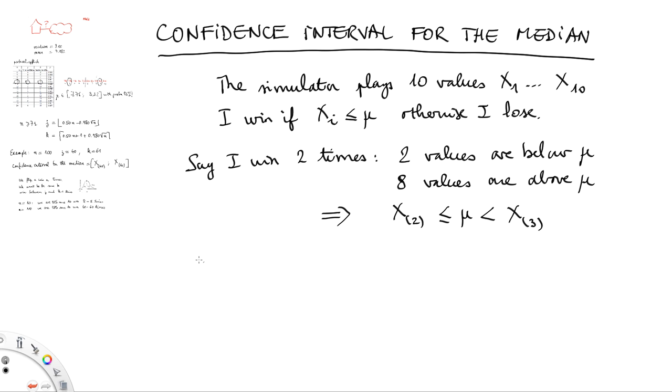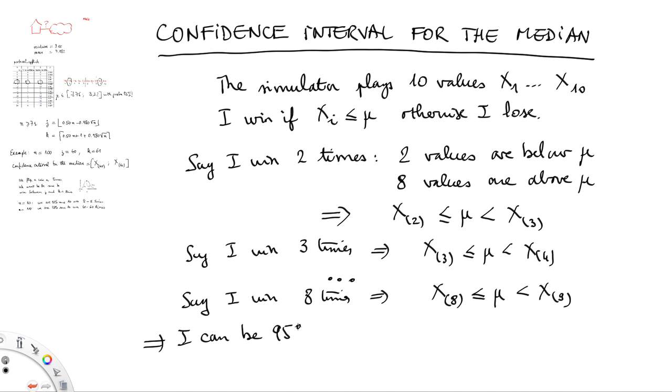This is exactly what it means that two values are below. Similarly, if I win three times, it means that the third value in increasing order is less than the median but the fourth is above. If I win eight times, it means the eighth is below mu and the ninth is above. Now, remember that from the binomial distribution, we know that we can be 95% sure that I will win between two to eight times. That means I can be 95% sure that the median is in one of those seven cases that I mentioned. So it means that mu must be between x sub 2, the second value in increasing order, and the ninth value in increasing order, which means that a confidence interval for the median is between x2 and x9.